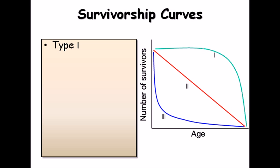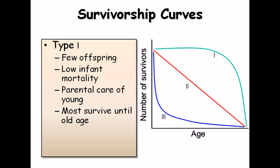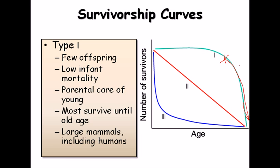In Type 1, the number of survivors is higher at the very beginning, then after some age individuals start to die and the curve goes down. These organisms have few offspring and low infant mortality because the young receive parental care, and most survive until old age. Examples are large mammals including humans — elephants, tigers, and lions.